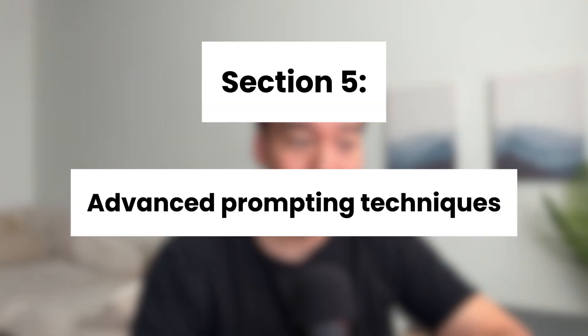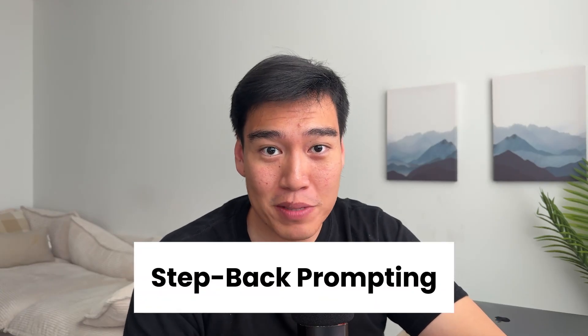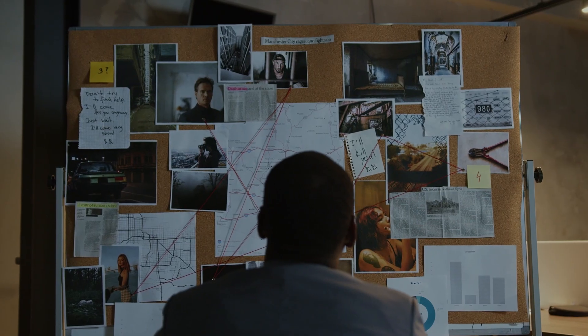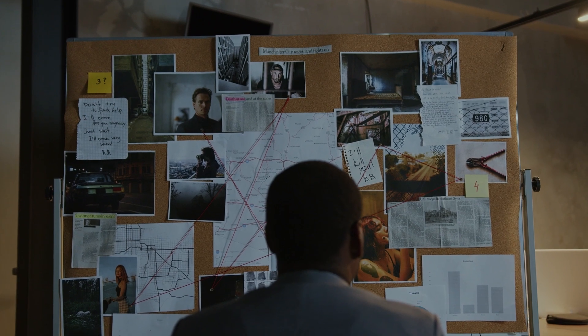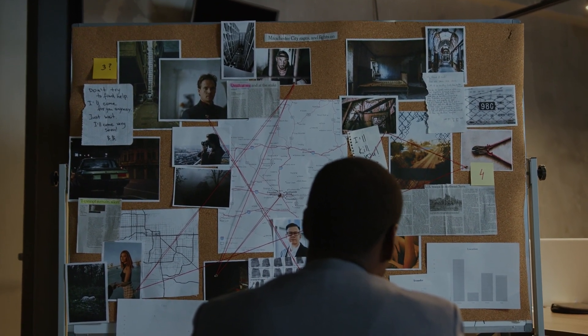Now let's go over advanced prompting techniques that can help the AI think even deeper. First, we have step-back prompting. This is a two-step approach where you first ask a broad general question to the AI, allowing it to tap into its overall knowledge and reasoning. Then you use that general knowledge as context to tackle a more specific problem. Think of this like solving a puzzle — instead of jumping straight to the answer, you first take a step back and look at the whole picture to get general ideas, then focus on the details.